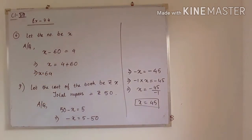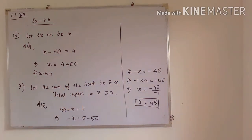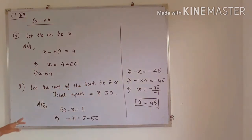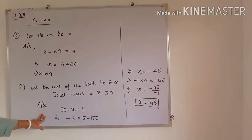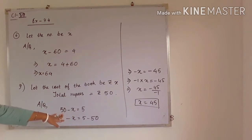Next, question number 9: After buying a book, I am left with 5 rupees out of my 50 rupees note. So total rupees is 50, and the cost of the book we have to find. Let the cost of the book be rupees x. According to the given question, our linear equation will be x subtracted from 50.